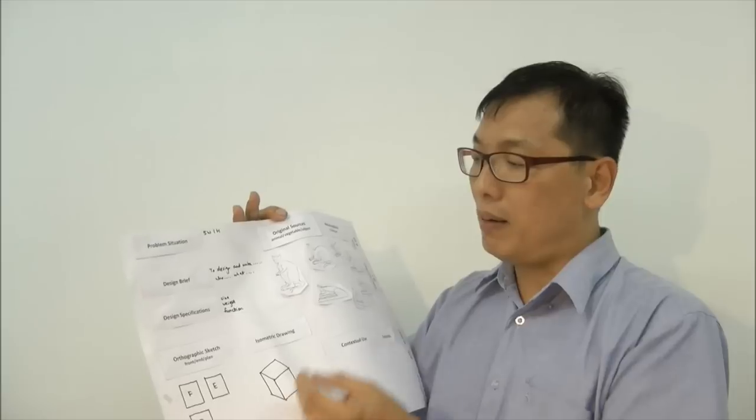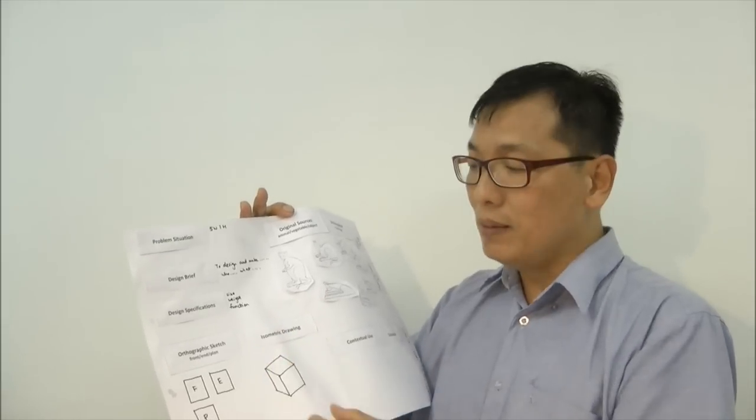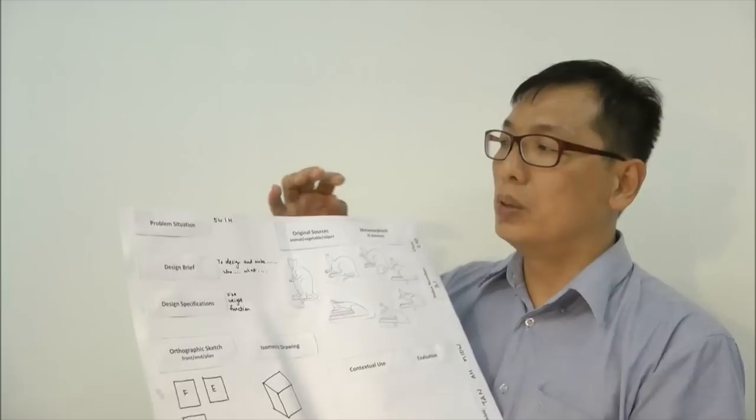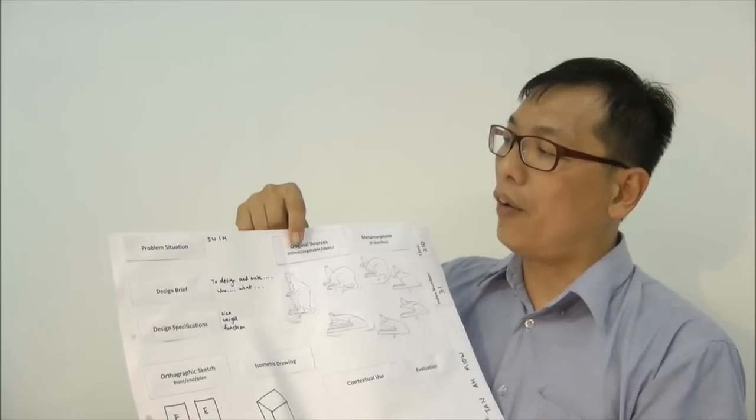Include a simple orthographic sketch of the front view, the end view, and the plan. Then an isometric drawing, and I want you to give me the metamorphosis - five sketches from the original.